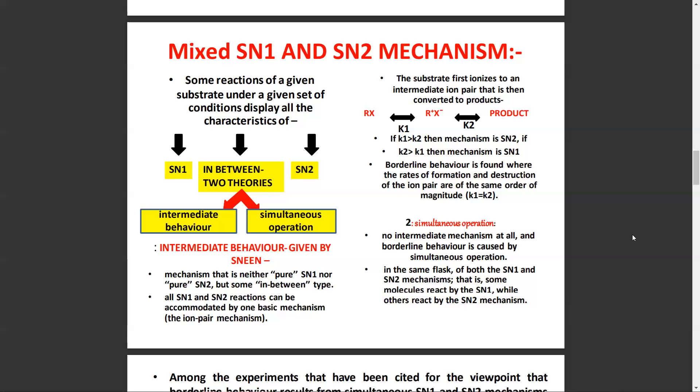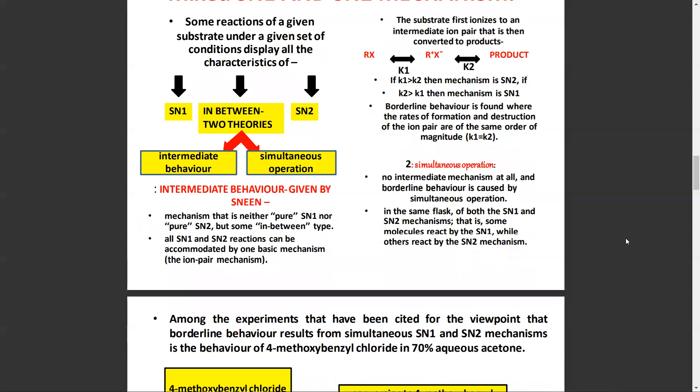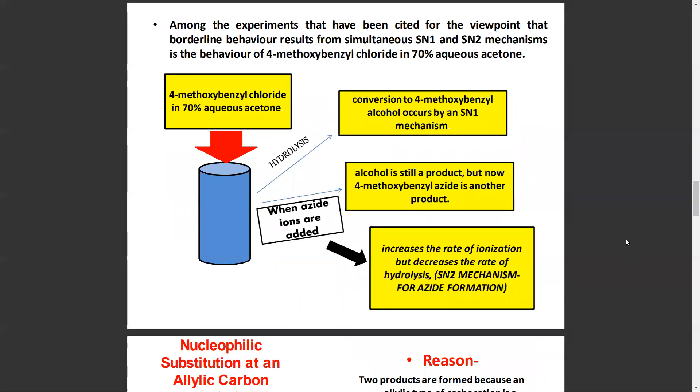Simultaneous operation means no intermediate mechanism at all, and borderline behavior is caused by simultaneous operation in the same flask of both the SN1 and SN2 mechanisms. That is, some molecules react by the SN1 while others react by the SN2 mechanism. Among the experiments cited for this viewpoint is the behavior of 4-methoxybenzyl chloride in 70% aqueous acetone.